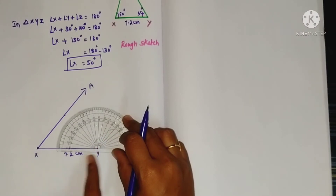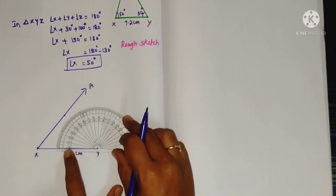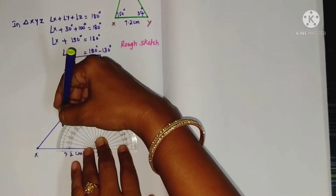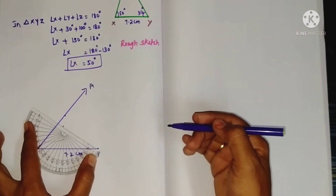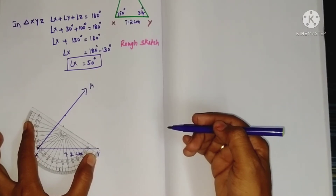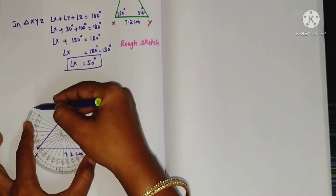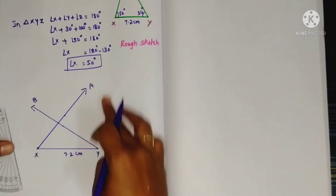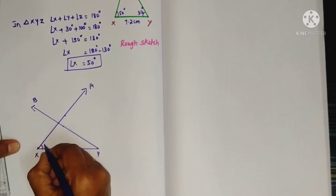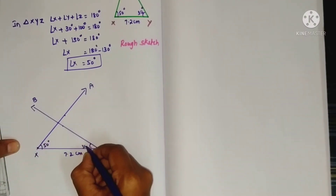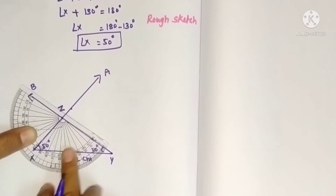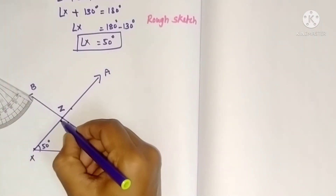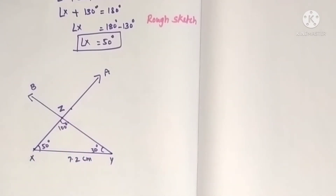The angle at Y is in this direction. Using the above scale, mark 30 degrees and place a point, then draw a ray through this point — let it be ray YB. Ray XA and ray YB give 50 degrees and 30 degrees respectively. Their intersecting point is Z, and if you check that angle, it will be 100 degrees. So angle Z is 100 degrees, and this completes the construction of the second problem.